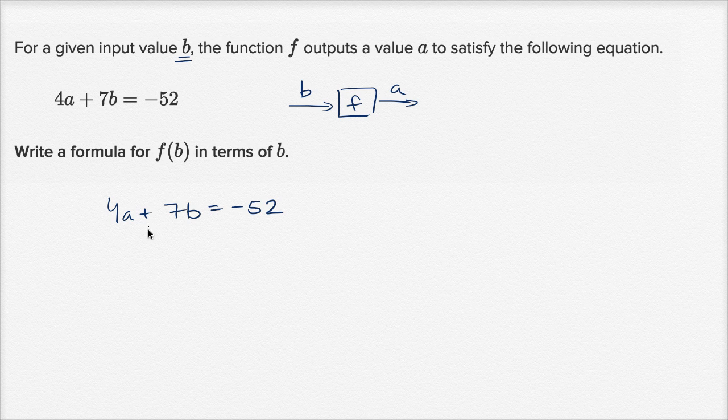I want to just have an a left over on the left hand side, and I want to have everything else on the right hand side, including the b's. So let's get rid of this b on the left hand side. I can do that by subtracting 7b. Now I of course want to do that to both sides; I can't just do an operation only on one side.